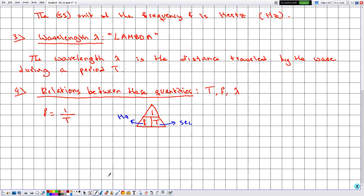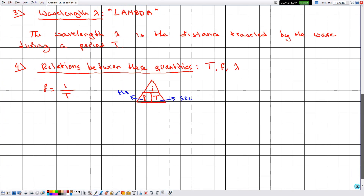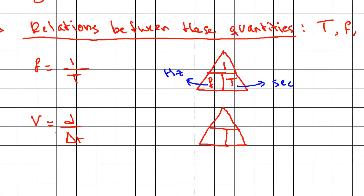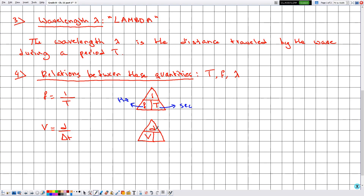Let's recall a relation from the first chapter of this year: speed equals distance over duration. We can construct a triangle where v is at the bottom, d at the top, and delta-t at the bottom. The units are: d in meters, delta-t in seconds, and speed in meters per second.